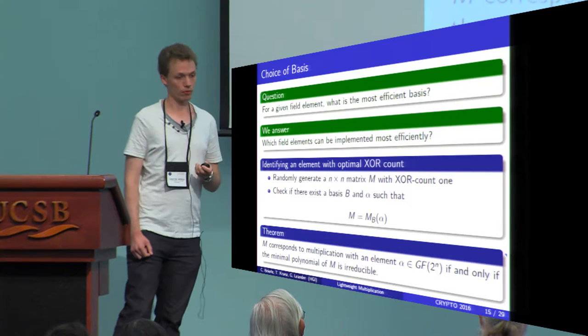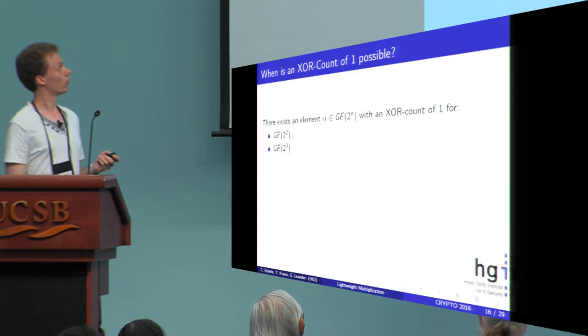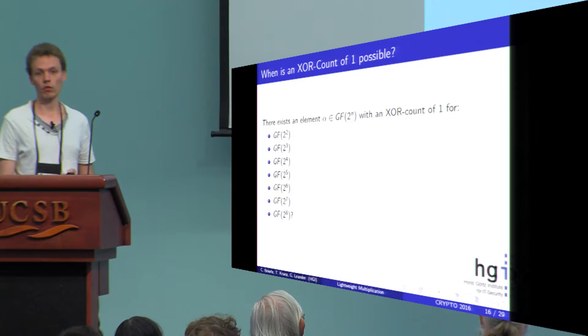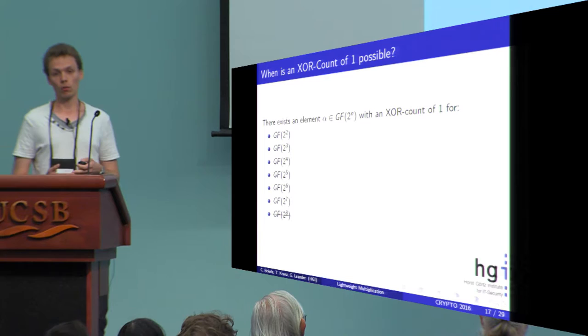If we do this you can easily see there exists this element with an XOR count of one for GF(2^2), 2^3, 2^4, 2^5, 2^6, 2^7. So the question is does it go on forever? And unfortunately it is not the case. Even in this very important field GF(2^8) it is not possible to find an element with the lowest XOR count of one.